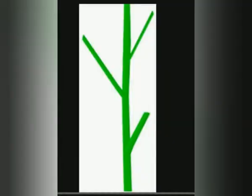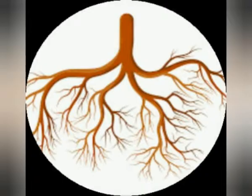Next one is stem. This is the main part of the shoot system. It gives support to the plant. Roots fix the plant in the soil.